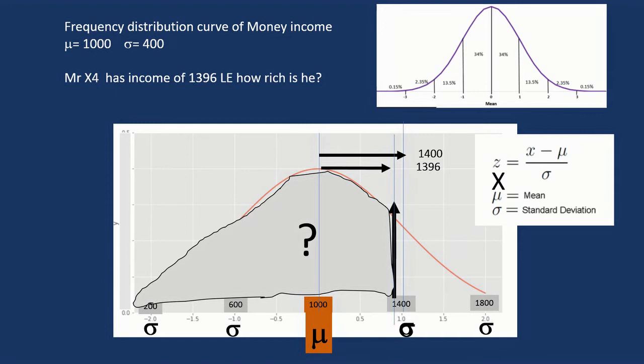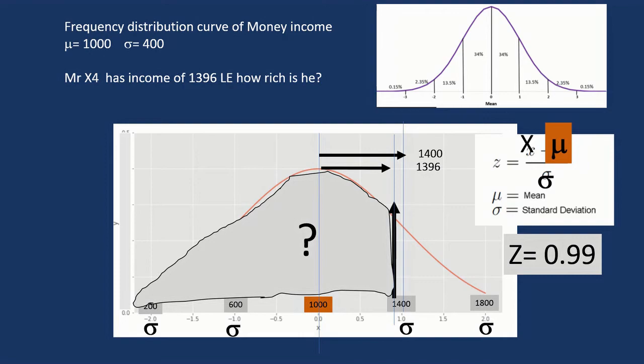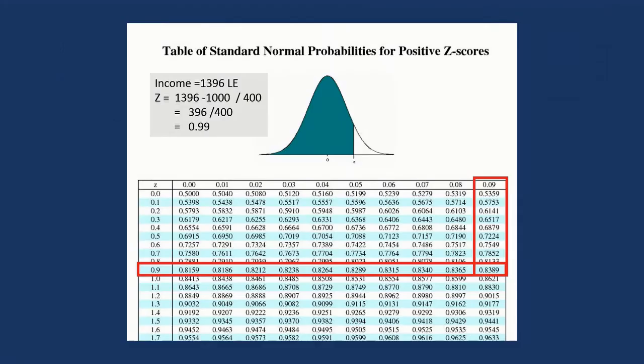This is the X. We subtract the mean and divide by the standard deviation. If we do that, we get a value of 0.99. Then we can go to tables and extract the percentage of this value.